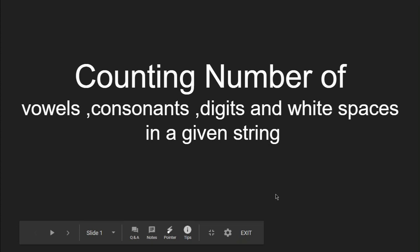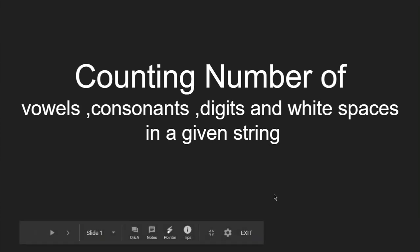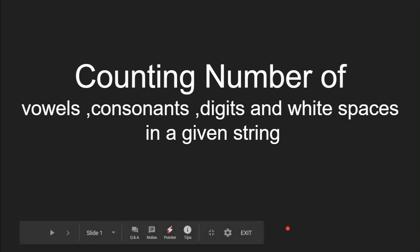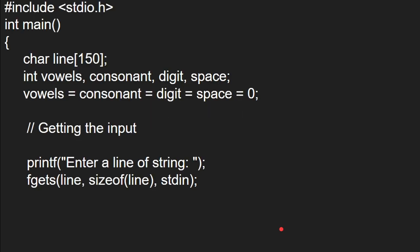Hello everyone. In this video we are going to see the concept of how to count the number of vowels, consonants, digits and white spaces in a given string. We all know that the vowels are a, e, i, o, u and the remaining letters are consonants, the digits are 0 to 9, and there are also spaces. There may also be special characters, but in this program we are going to count only the vowels, consonants, digits and white spaces.